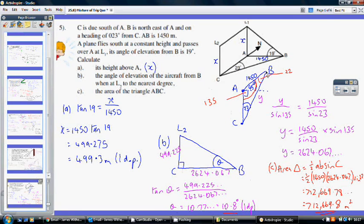Then, we're finally, we're being asked to work out the area of the triangle ABC. Well, that's not too bad. I know this side here is 1450. I've just worked out this length here to be 2624.067. So, if I use the angle in between as my angle C for the formula, and that's easy to work out, because that's just 180, take away 23, take away 135 to be 22. So, there's my length, 1450. There's my other length, 2624. The angle in between is 22. So, using half AB sin C, is half times 1450 times 2624.067 times sin 22 gives me 712,669.78, which, let's say, to one decimal place, is 712,669.8 metres squared.